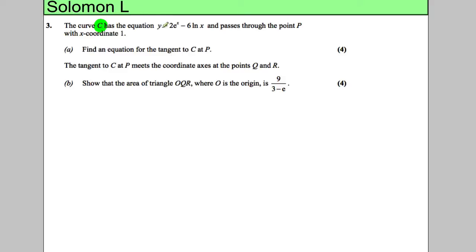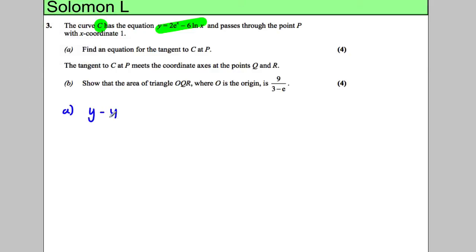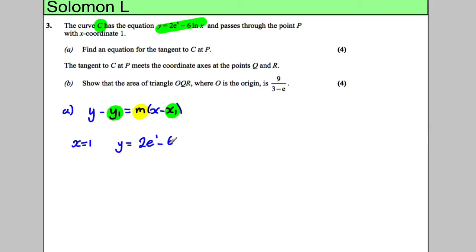We have a curve C given by y = 2eˣ - 6ln(x), and it passes through point P with x-coordinate 1. We need to find the equation of the tangent. First, let's get our easy mark: substitute x = 1 to find the y-coordinate. y = 2e¹ - 6ln(1). Since ln(1) = 0, y = 2e. So our coordinate is (1, 2e).